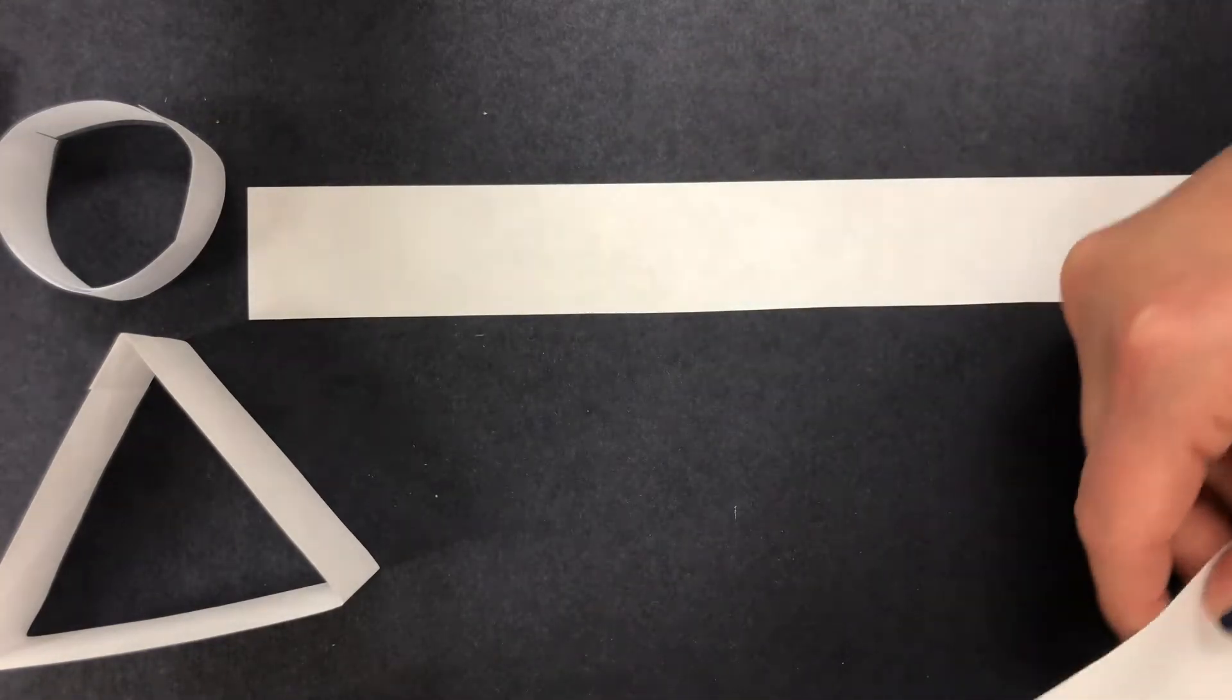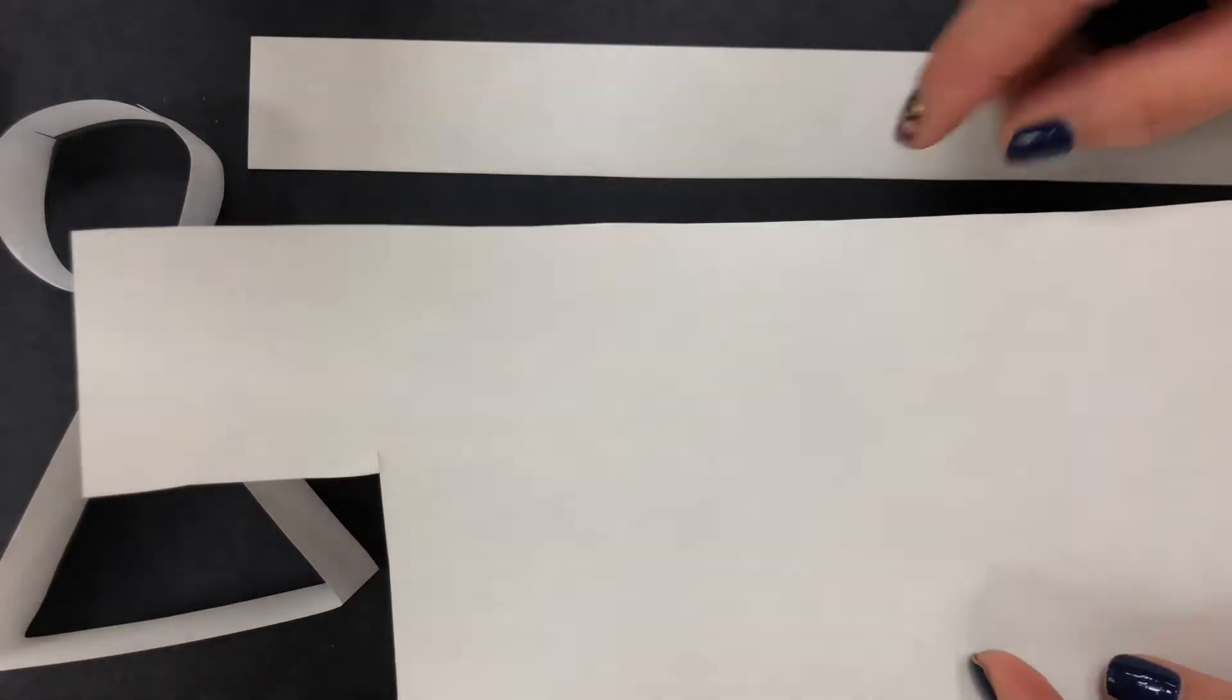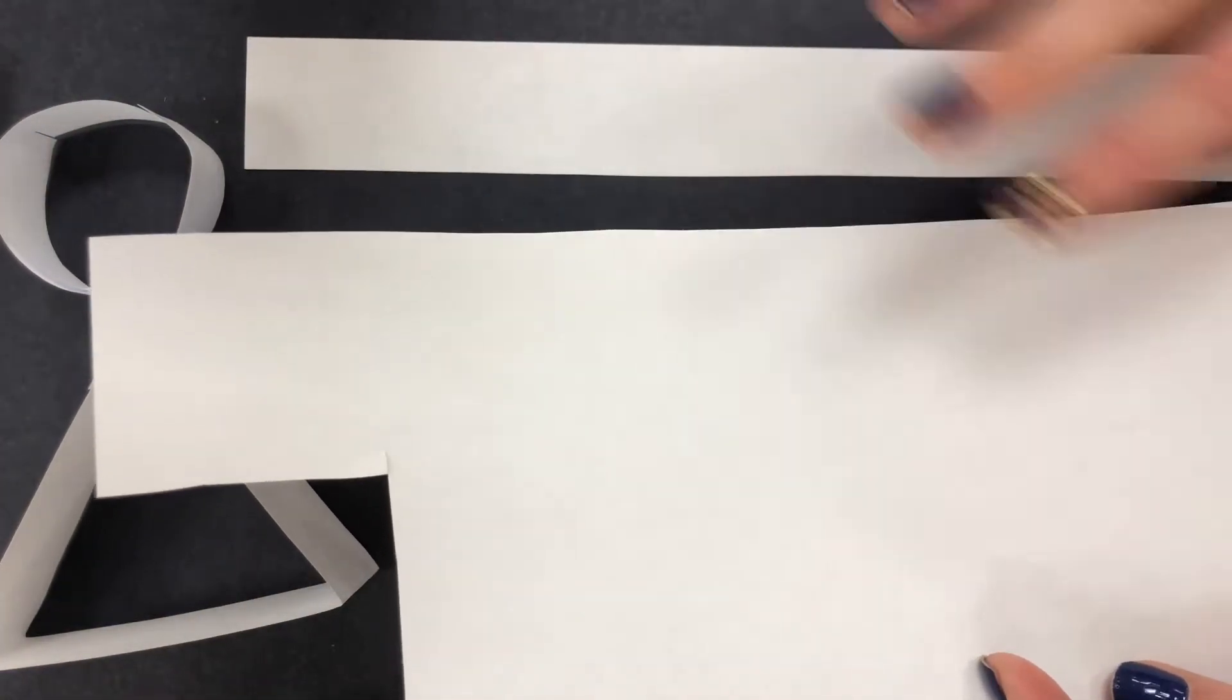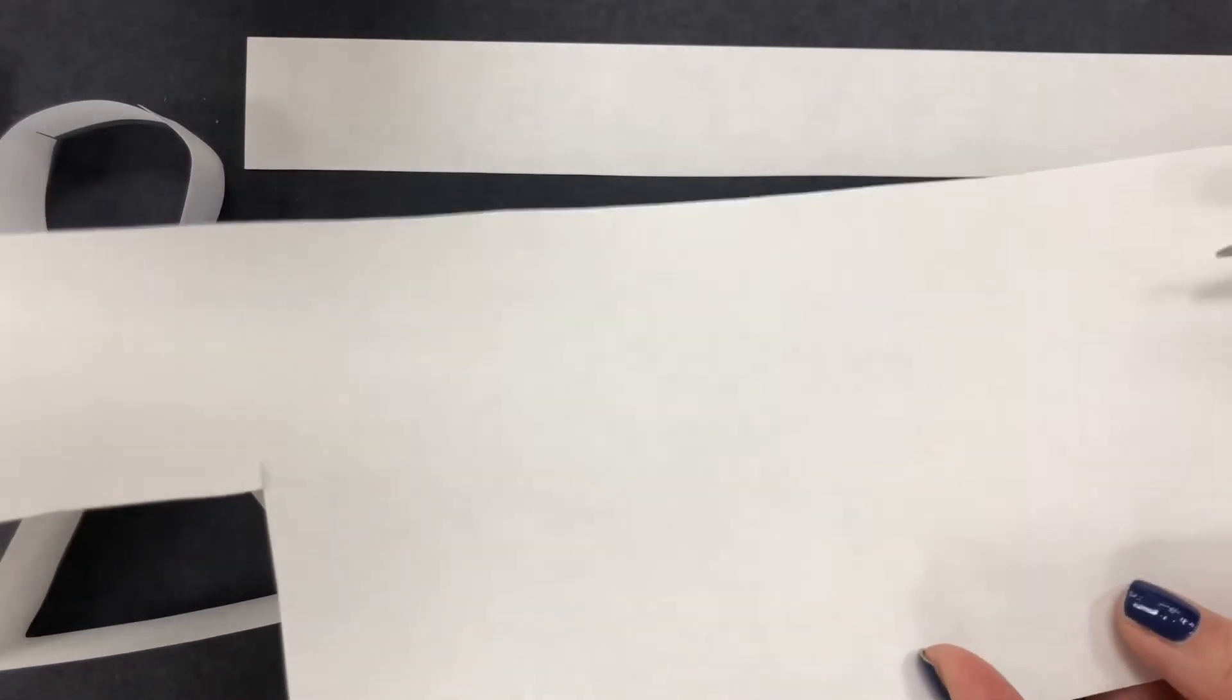First let's start by getting a few strips of paper prepared. I'm using just floppy computer paper and I'm going to cut a few strips for myself. I've already got one, I want two more. Go ahead and get some paper for yourself and cut some long thin strips to use.